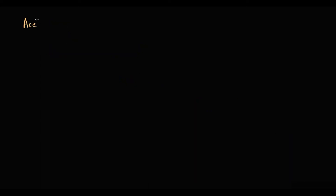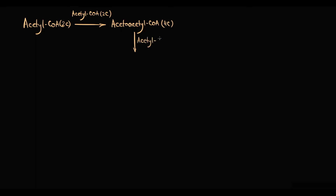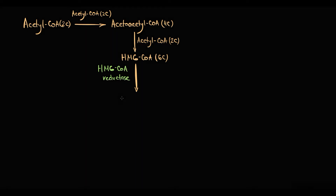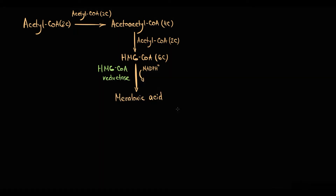Initially, two acetyl-CoA molecules condense together with formation of acetoacetyl-CoA — now we have four carbons. Then condensation of acetoacetyl-CoA with acetyl-CoA results in formation of HMG-CoA that has six carbons. HMG-CoA undergoes reduction provided by the major enzyme in cholesterol synthesis, HMG-CoA reductase, which uses NADPH as a cofactor. This reaction results in production of mevalonic acid, so-called mevalonate.